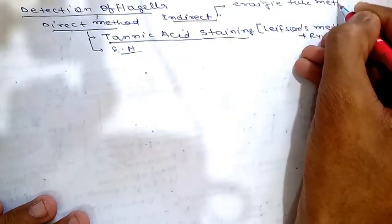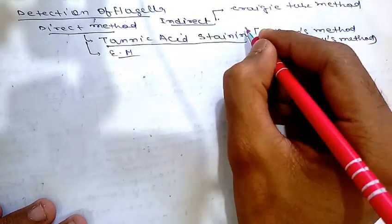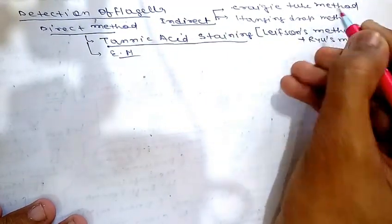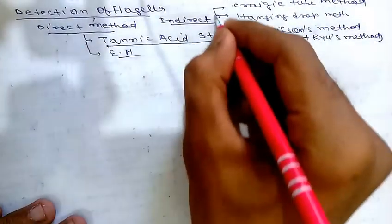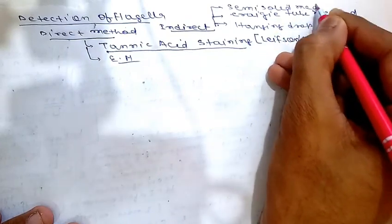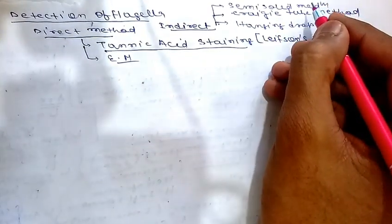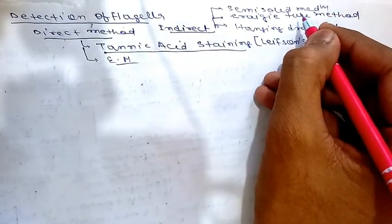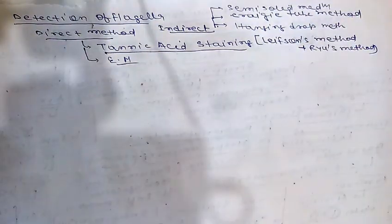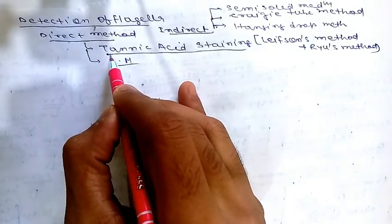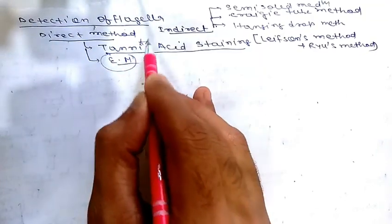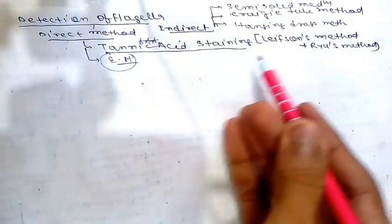Indirect methods for flagella detection include: the Craigie tube method, the hanging drop method, and semi-solid medium such as Mannitol motility medium, where motility of the organism is observed. For MCQs: tannic acid staining (Leifson's/Ryu's method) is important for direct detection, along with the Craigie tube and hanging drop methods.